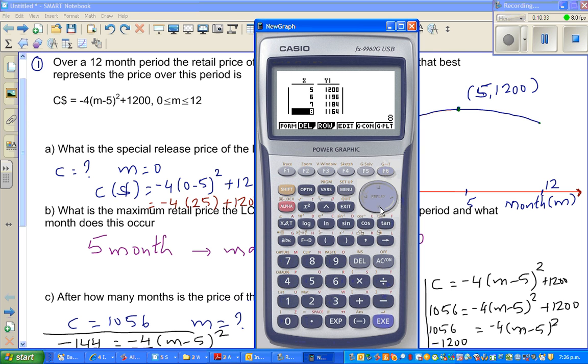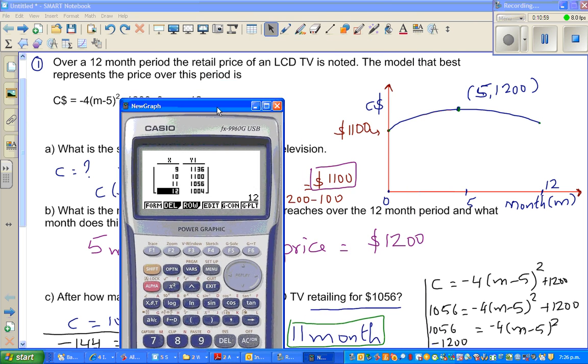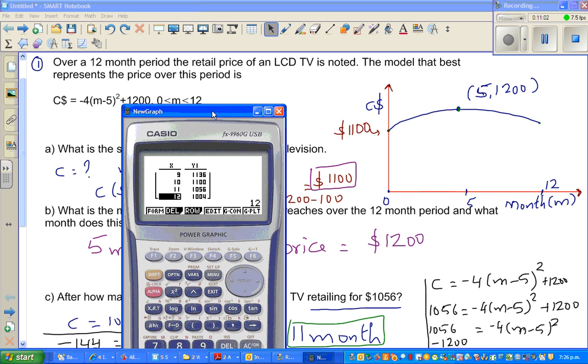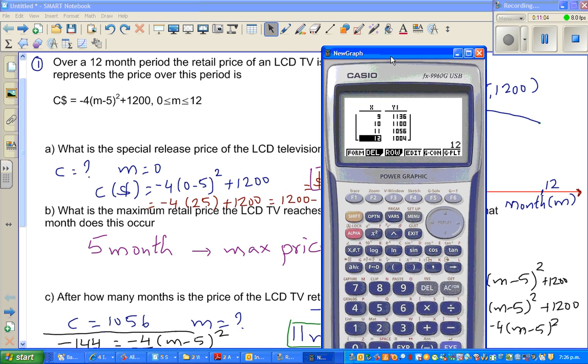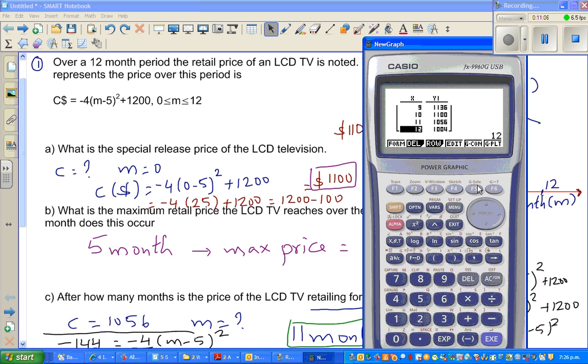So it's going down. It started at 1100, it reached the peak after five months at 1200, then the prices are going down. After 12 months it went even below the initial price, the release price.